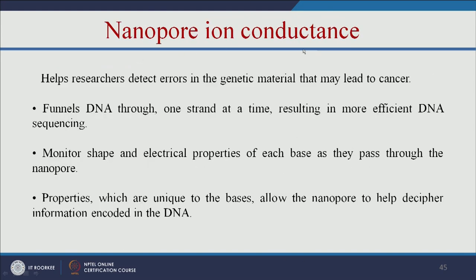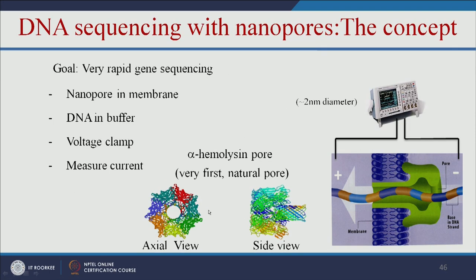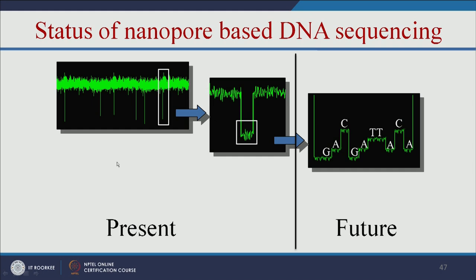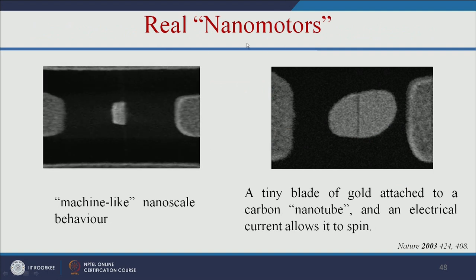Nanopore ion conductance using carbon nanotubes can be used for DNA sequencing, helping researchers detect errors in genetic material that may lead to cancer. DNA is passed through small pores in the CNT, similar to conventional DNA sequencing. The protein alpha-hemolysin has been used for this but is toxic; CNTs offer a safer alternative. When single-stranded DNA passes through the carbon nanotubes, there is a decay in current. Future research aims to develop sensors that give different current decay signatures for each base G, A, and C, enabling low-cost DNA sequencing.